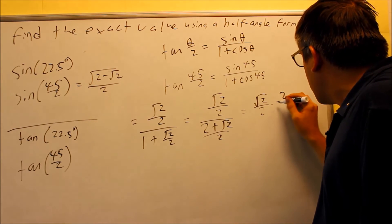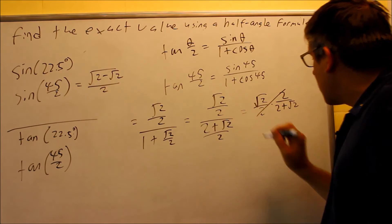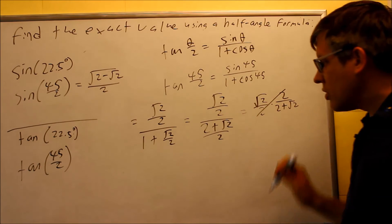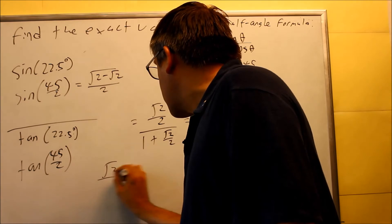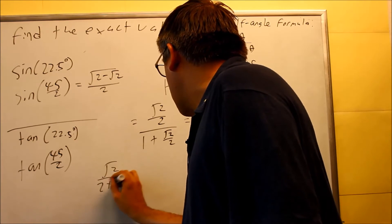And then we're going to take the top fraction and multiply by the reciprocal of the bottom one. So then we'll get 2 over 2 plus radical 2. That's going to cancel out the 2s, and we end up getting radical 2 over 2 plus radical 2.